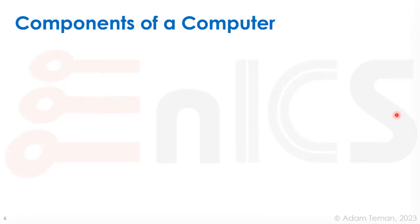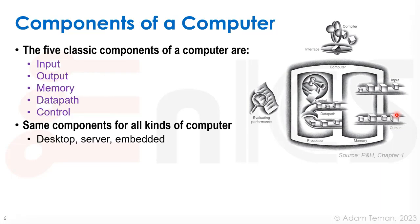However, what these all have in common are specific components. Going to Patterson and Hennessy, they give this picture of a human heart, and we have five classic components of the computer similar to the heart: input, output, memory, data path, and control. All of the different types of computers — desktops, servers, and embedded computers — will all have these basic components. When we talk about the microprocessor, we're talking about the data path and the control.